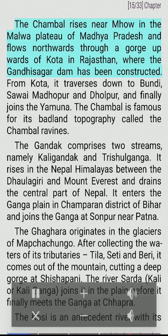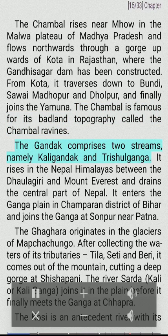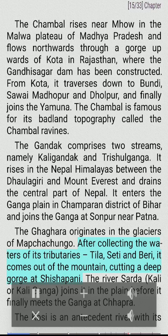The Chambal rises near Mhow in the Malwa plateau of Madhya Pradesh and flows northwards through a gorge upwards of Kota in Rajasthan, where the Gandhisagar Dam has been constructed. From Kota it traverses down to Bundi, Sawai Madhopur, and Dholpur before joining the Yamuna. The Chambal is famous for its badland topography called the Chambal ravines. The Gandak comprises two streams — Kaligandaki and Trisulganga — rising in the Nepal Himalayas between Dhaulagiri and Mount Everest, entering the Ganga plain in Champaran district of Bihar.